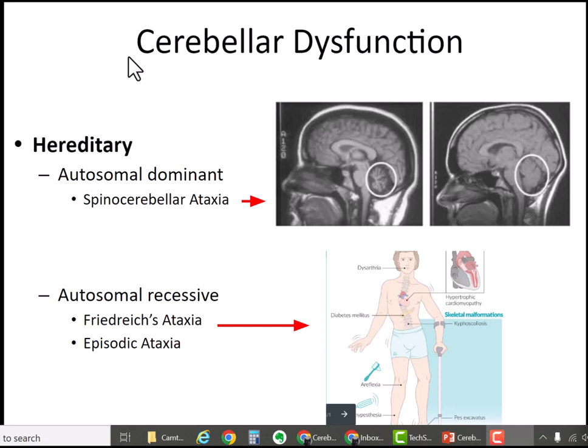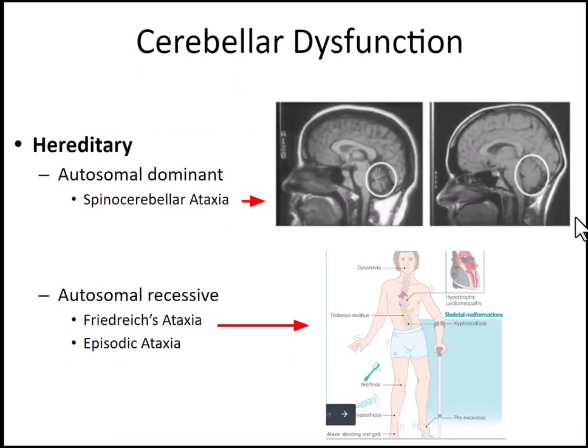Another way to inherit cerebellar dysfunction is in an autosomal recessive manner, and Friedreich's ataxia is an example. These patients have hypertrophic cardiomyopathy (enlarged heart), and present with dysarthria, typically diabetes, scoliosis, areflexia, significant ataxia with gait and standing, and pes cavus.